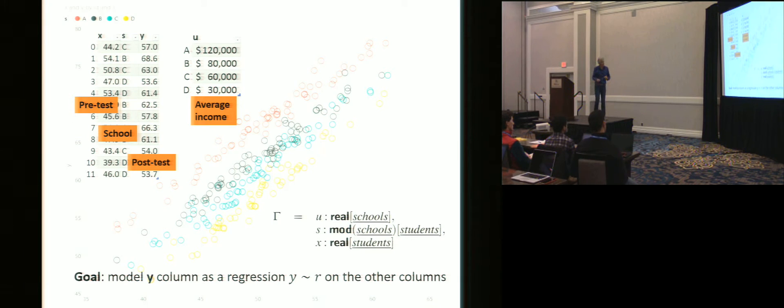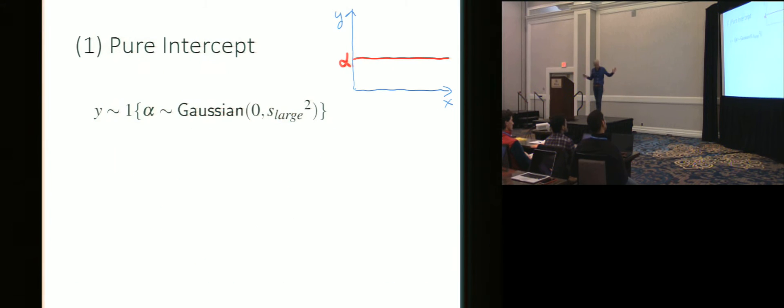So the data looks like this. If you're a data scientist, you should always start by looking at the data. A particular point there means that this pupil has come in and they started with a score of 53 and they've come out with a score of 60. So they've improved. And the color coding is showing that there's four different schools. You can immediately see some structure to it. School A, the red school, seems to be doing a bit better. Its baseline down here seems to be a bit higher than the others. And if you look at the numbers, that would appear to correlate with the average incomes. So we'd expect to have a model that could represent that.